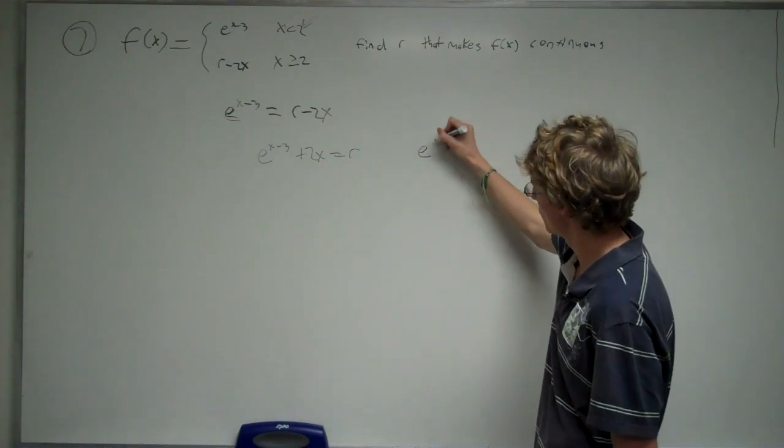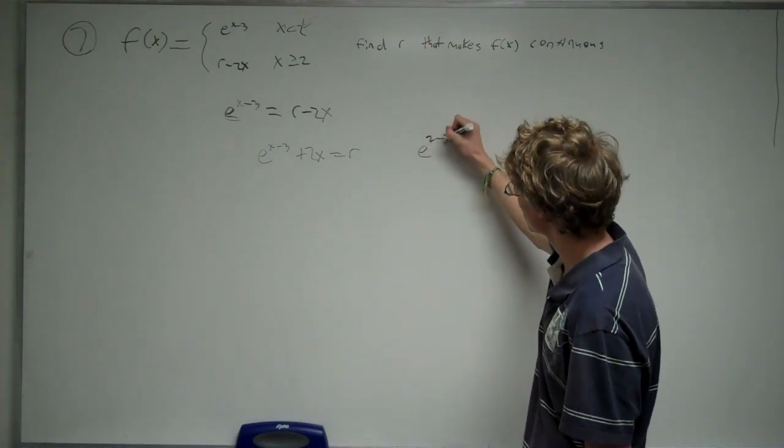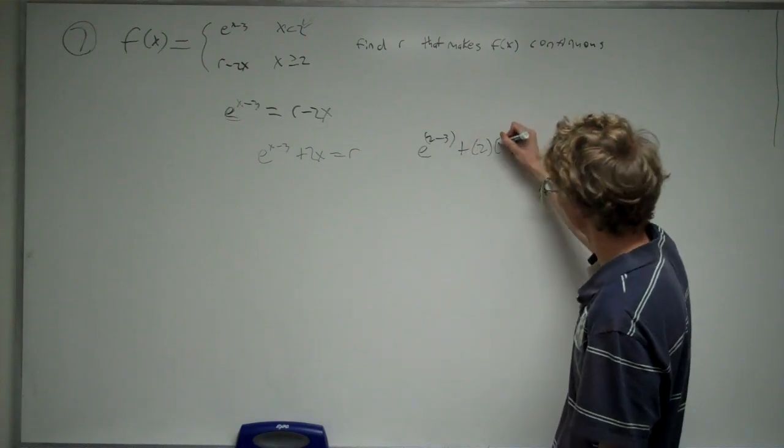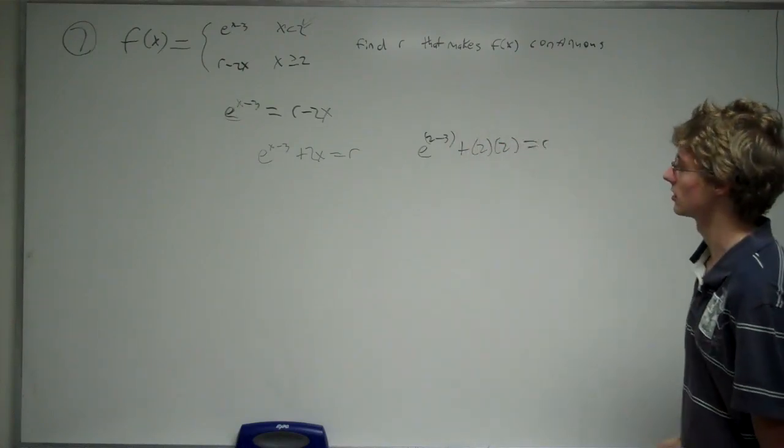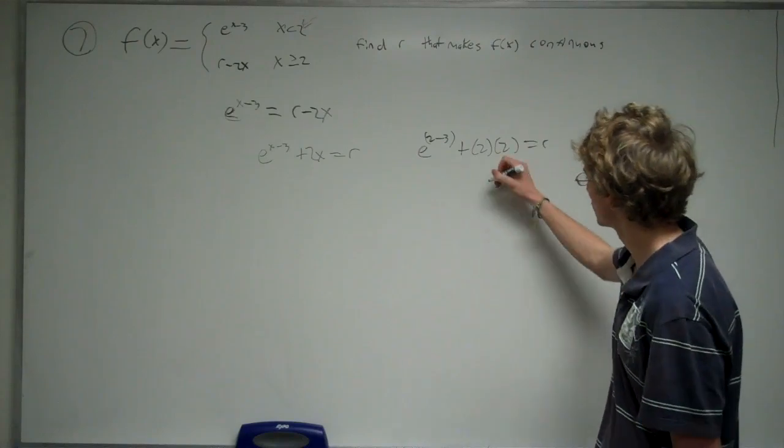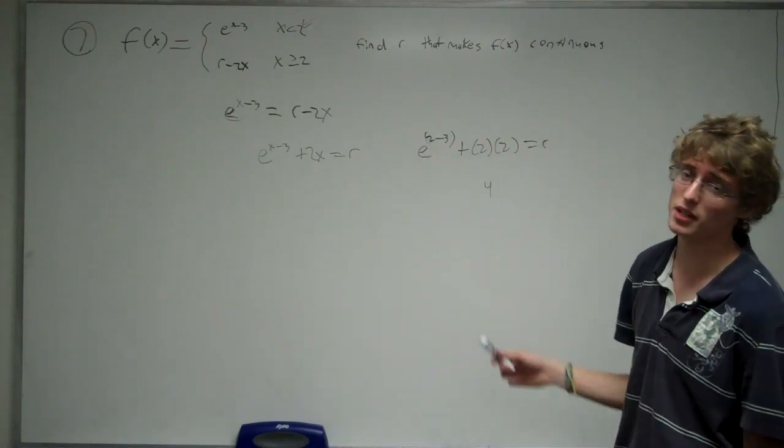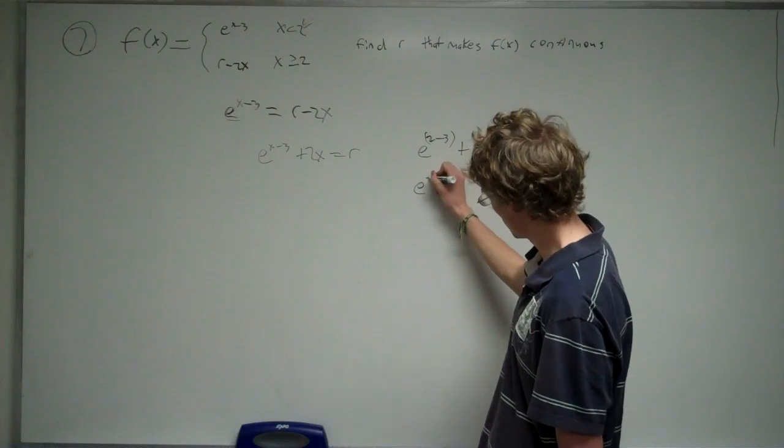And that's going to give you e to the two minus three plus two times two equals r. Two times two is four. e to the two minus three, well, two minus three is negative one, so this is going to be e raised to the negative one.